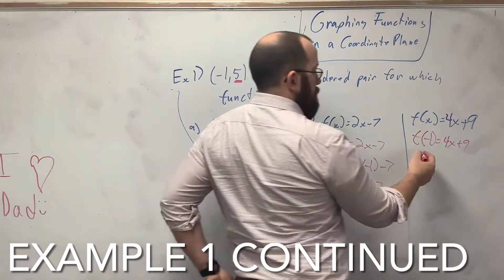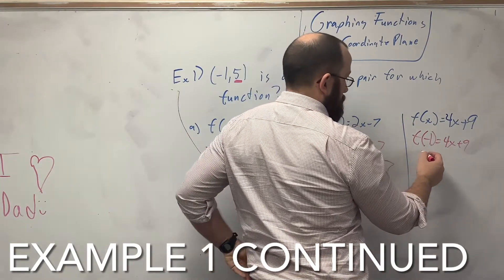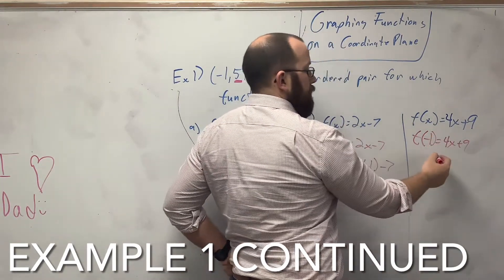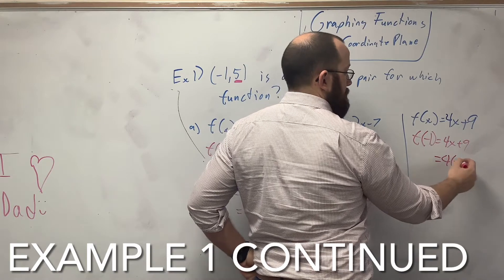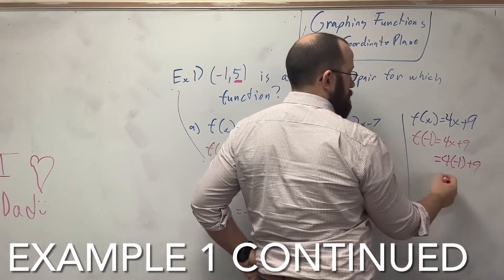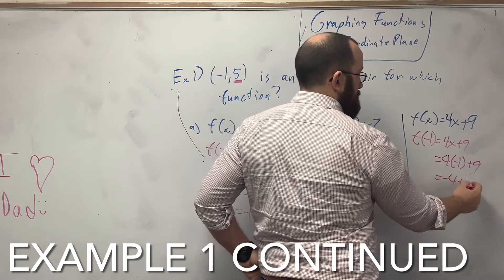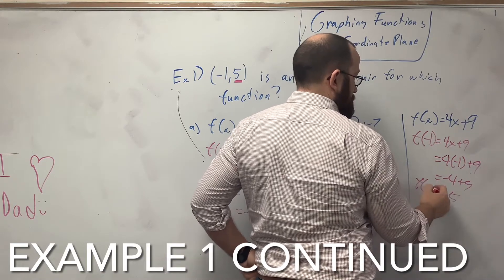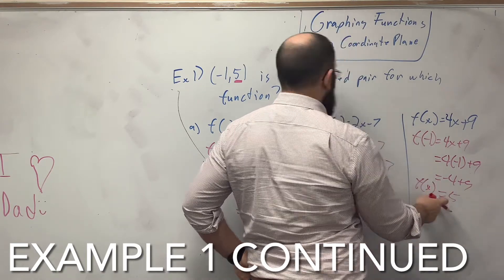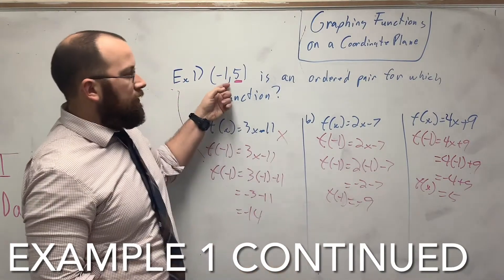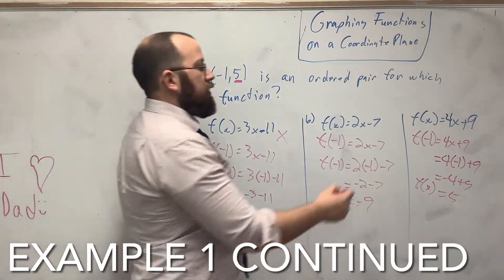Alright, now for our last one. I'm going to plug in negative 1 for everywhere I see x. 4 times negative 1 plus 9. Negative 4 plus 9 equals 5. So this right here is the function that negative 1, 5 matches up with.